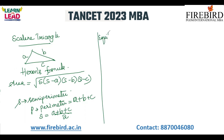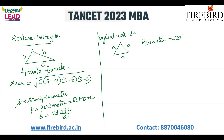Then the equilateral triangle. What is an equilateral triangle? All three sides are equal. Its perimeter is 3a. What about its area? Area is equal to root 3 by 4 times a squared.